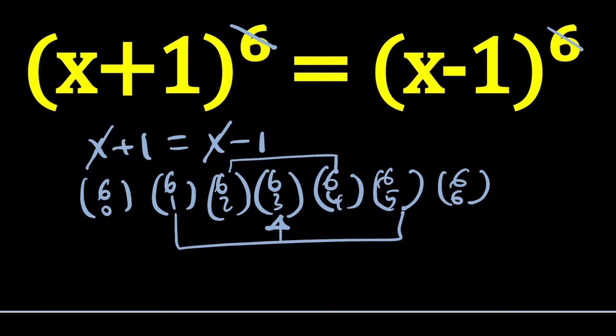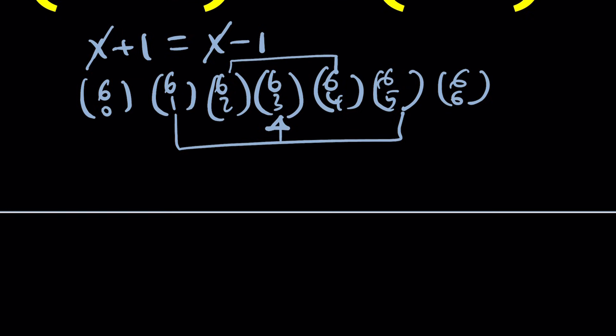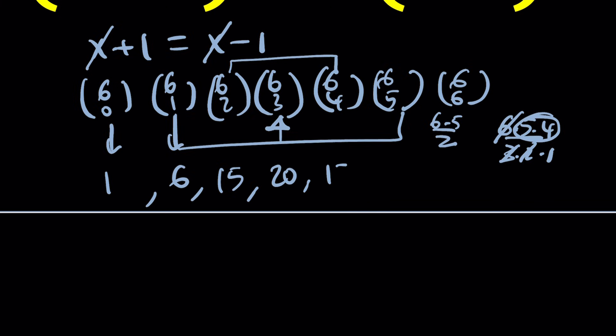Those are the coefficients. And if you expand it, this is going to be a 1, this is going to be a 6, and then 6 choose 2 is basically 6×5/2, which is 15. And then 6 choose 3 is 6×5×4/(3×2×1), which is 20. And then you're going to go back to 15 and then 6 and then 1. Symmetry, right? Beautiful symmetry.